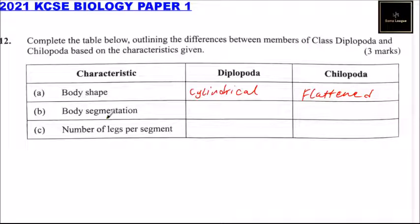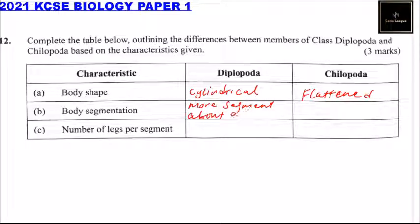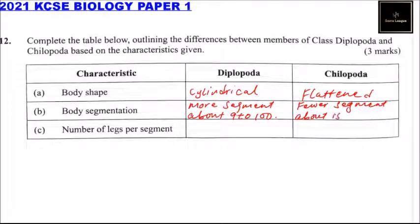In terms of body segments, Diplopoda has more segments — about 9 to 100. Chilopoda has fewer segments, about 15 to 21 or more.